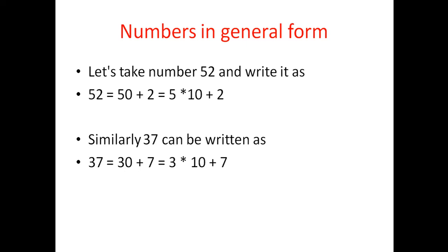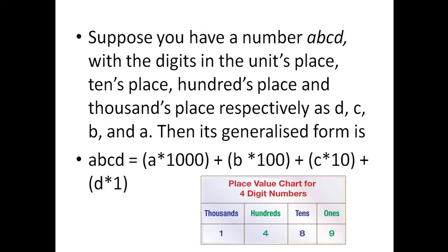Adding them gives 52. This is the general form. Similarly, 37 can be written as 30 plus 7, which is 3 into 10 plus 7, equal to 37.